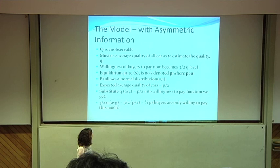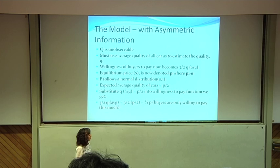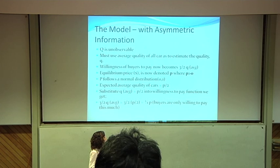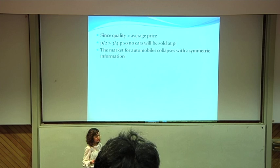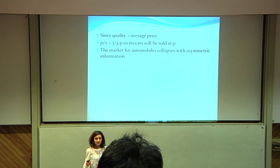If we substitute the value of Q average as P over 2 into the willingness to pay function, we get 3 over 2 times Q average equal to 3 over 2 times P over 2, which is 3 quarters P. This is the average price that buyers are only willing to pay. Since the quality of the car will be greater than the average price, no cars will be sold at P, because owners of good cars will not want to sell their cars at a lower price than they're worth. So the market for automobiles collapses.